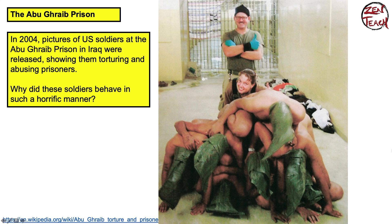George W. Bush, the president back then, claimed that this was an isolated incident, meaning it didn't happen anywhere else in any of the other prisons the Americans controlled. But we know now that it was more widespread than that. The famous Guantanamo prison in Cuba, also controlled by the Americans, showed similar behavior and abuse of prisoners. It's not that Americans are more evil — it is a very human thing that when you have a war, the aggressors usually act very horrifically towards the local population.